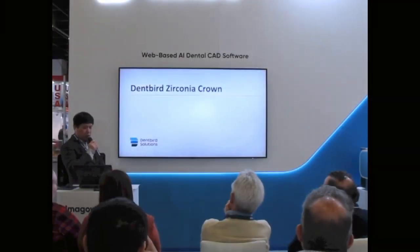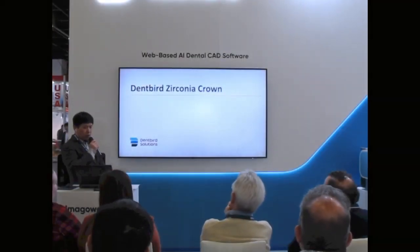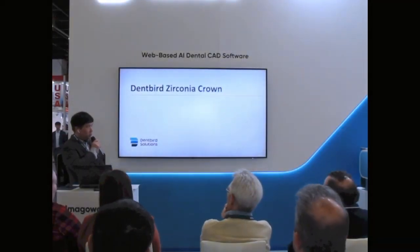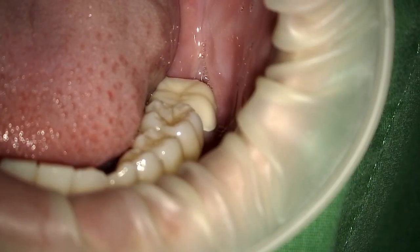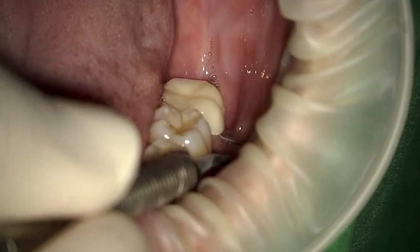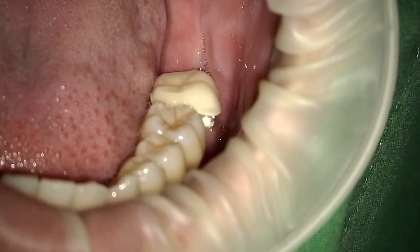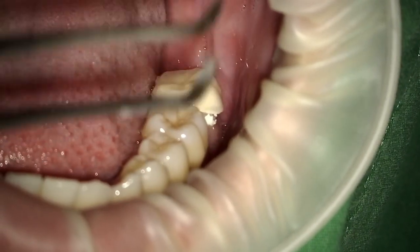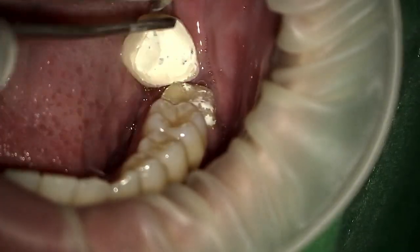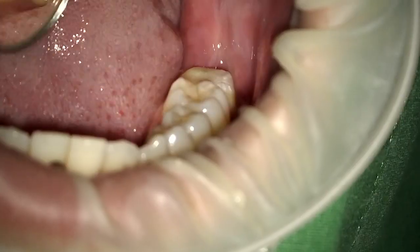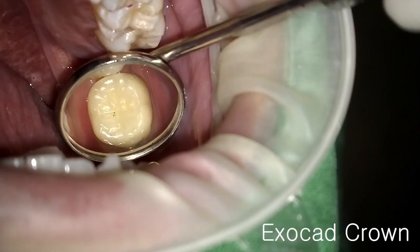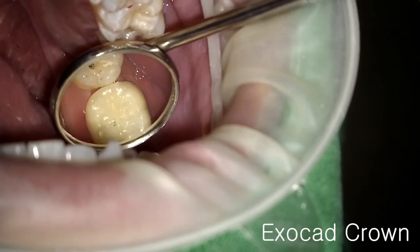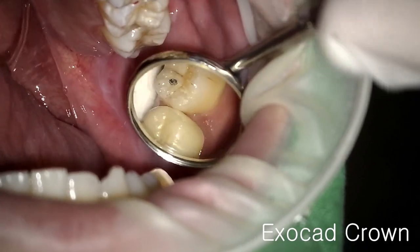Let's proceed with the final seating of the restoration. Remove the temporary tooth and confirm that the inside is clean. Try the final restoration and check the bite.